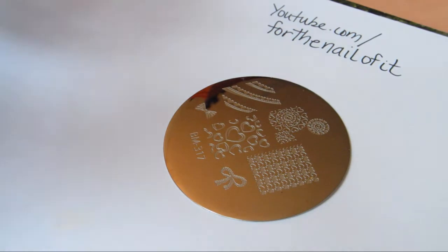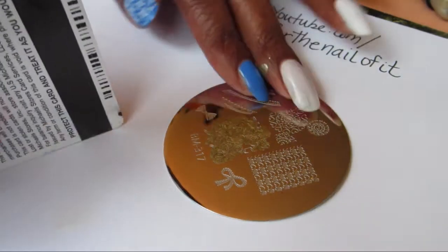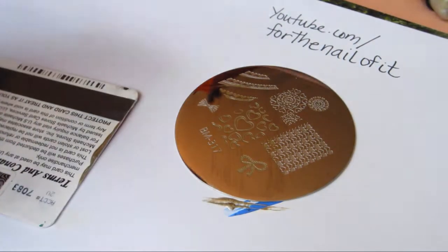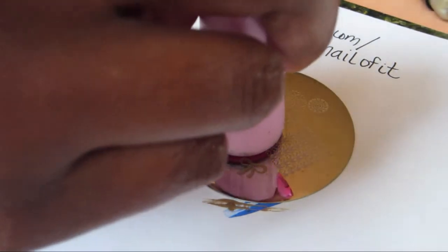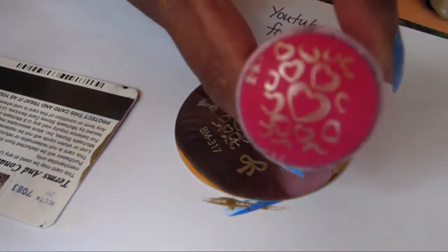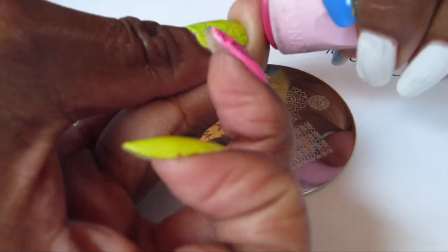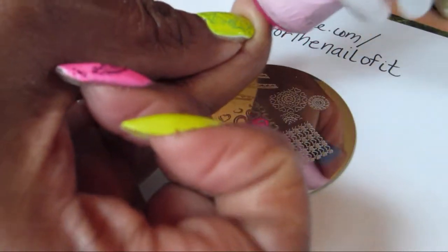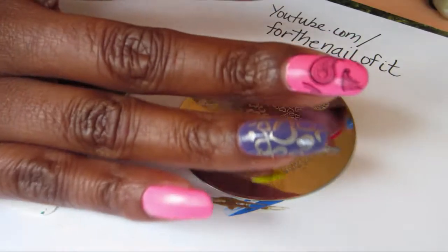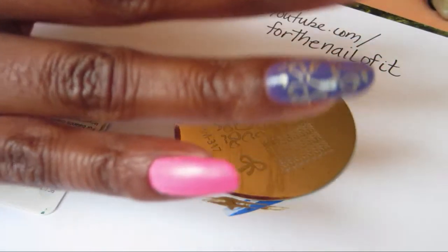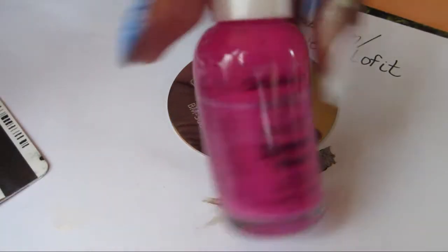Next up I'm going to be using my Sally Hansen quick color pen in gold. I'm going to do this heart design right here. As you can see the image transfers really nicely. I just want to apologize for being out of frame for a lot of the stamping parts. This is my first time doing a stamping video so I'm still kind of learning the angles. But the image turns out really nice. I think this would be a really cute manicure.